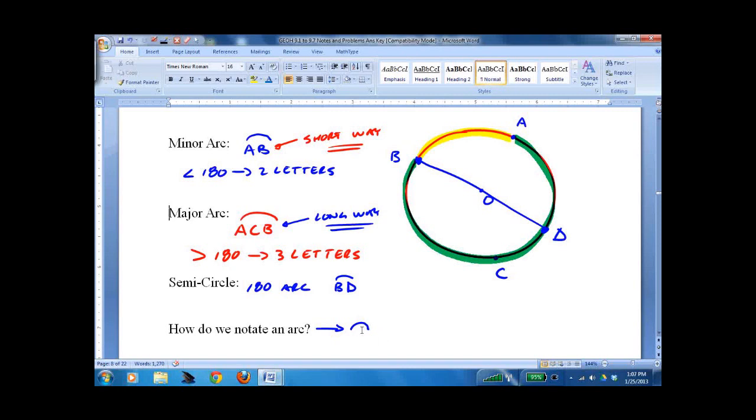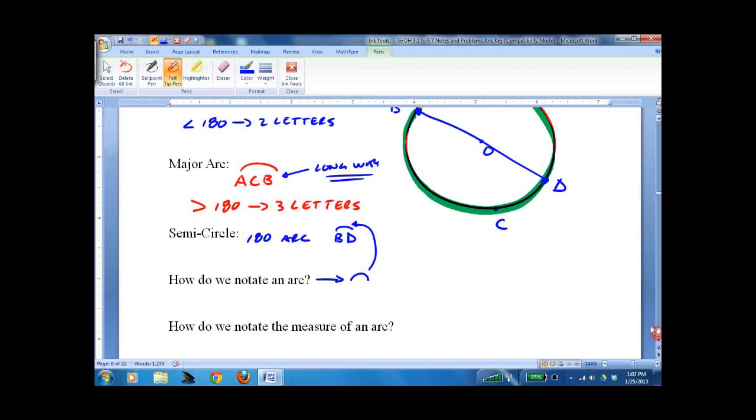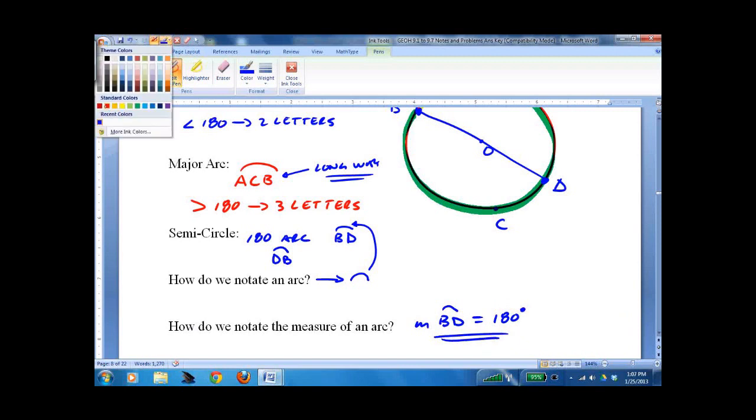How do we notate an arc? With the little thing on top, like we talked about. How do we notate the measure of an arc? Same thing, measure of BD. Oh, and by the way, semicircle could also be DB. Doesn't matter. Measure of BD equals 180 degrees. If you're confused, don't worry about it. It will become more clear as we go through it.